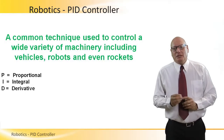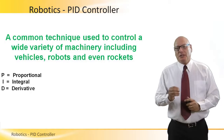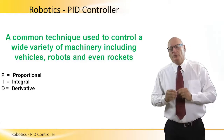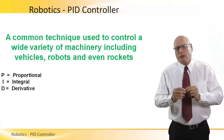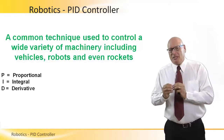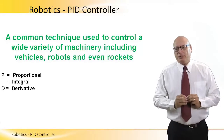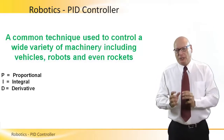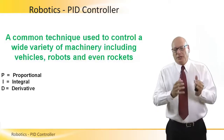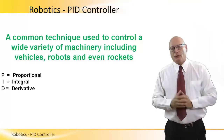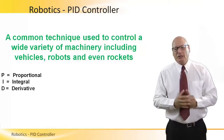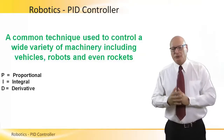A PID is a common technique used to control motors of a robot, and PID is basically an abbreviation of three different methods: P stands for proportional, I stands for integral, and D stands for derivative.